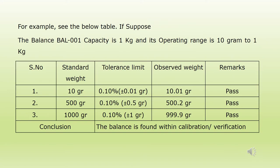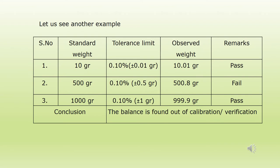For example, if the balance capacity is 1 kg and its operating range is 10 grams to 1 kg, and it is calibrated using 10 grams, 500 grams, and 1000 grams, and the observed weights are within the tolerance limit, the balance is said to be calibrated or verified successfully. If the observed results are out of the tolerance limit, the balance is said to be out of calibration for daily verification.